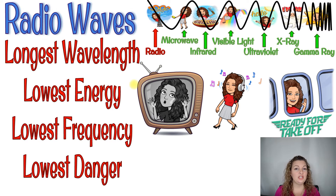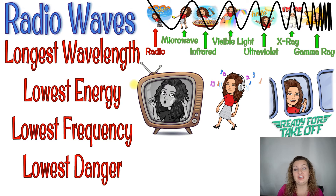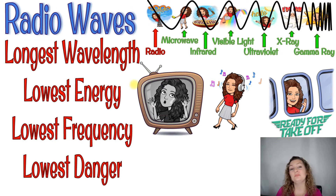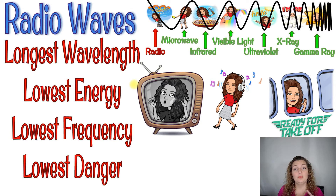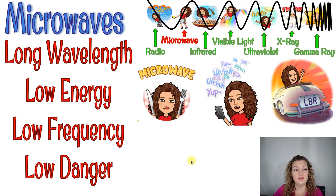We have radio waves all around us all the time. We use them for radio transmission — if you turn on the radio, those waves are getting to your radio through electromagnetic spectrum radio waves. Television broadcasting is how we use radio waves to see what's on our television. And if you've ever been in an airplane, that's how your pilot talks to the people corresponding your route, so you don't run into each other when you're up in the air.